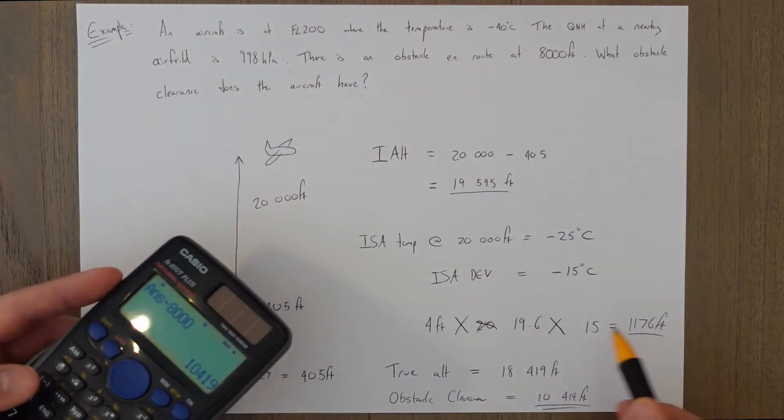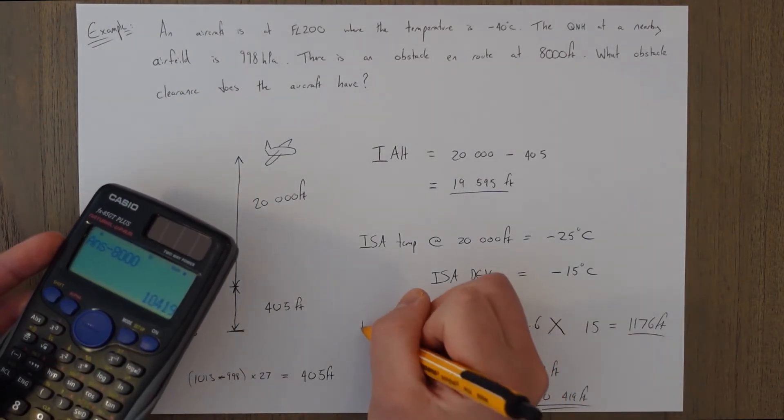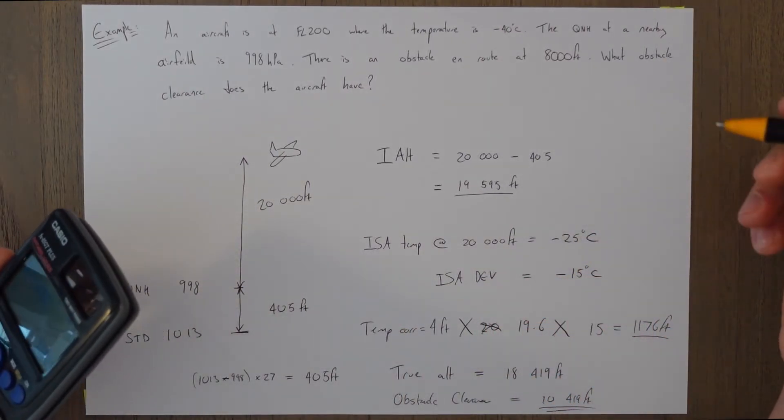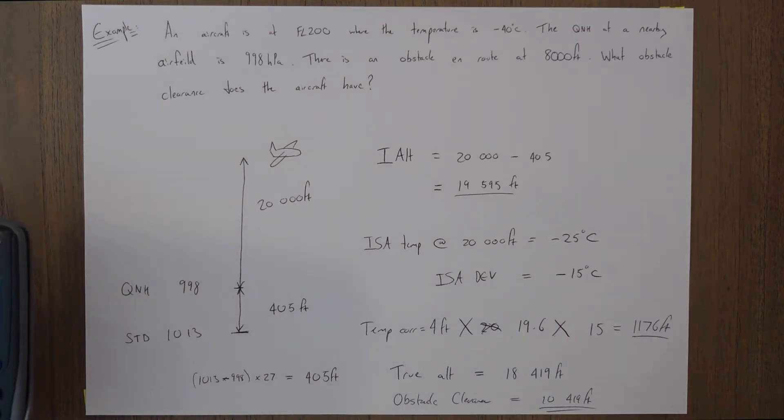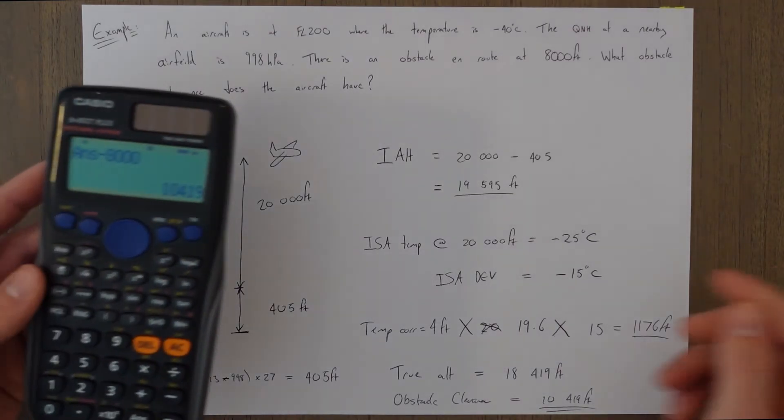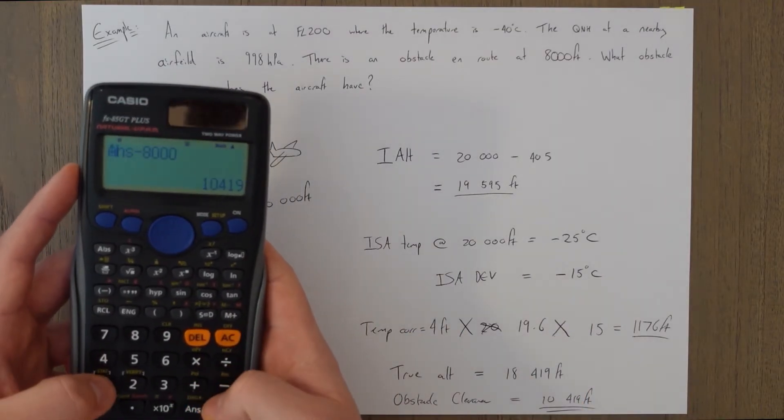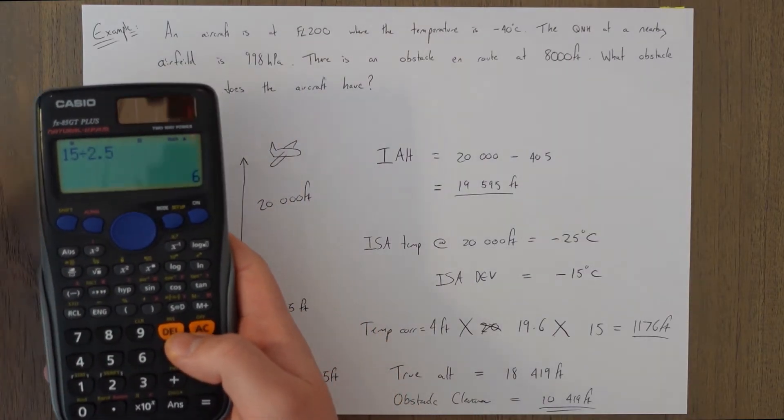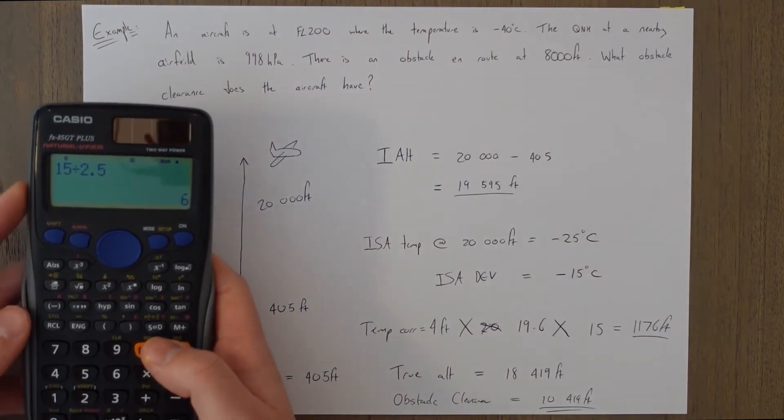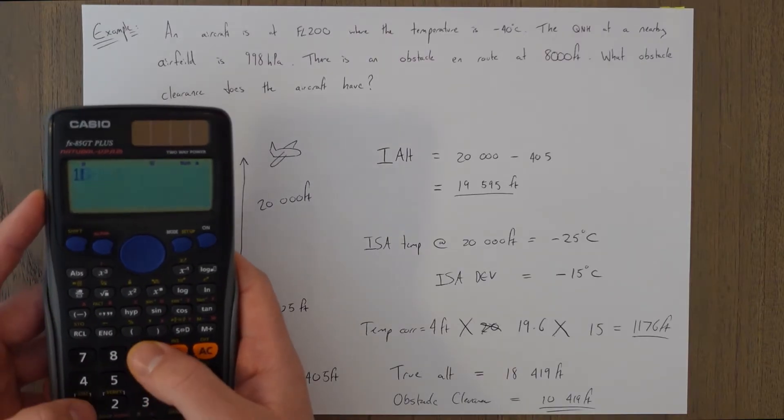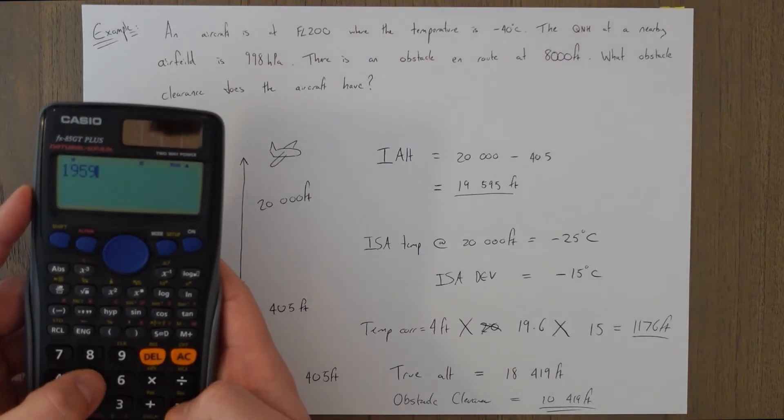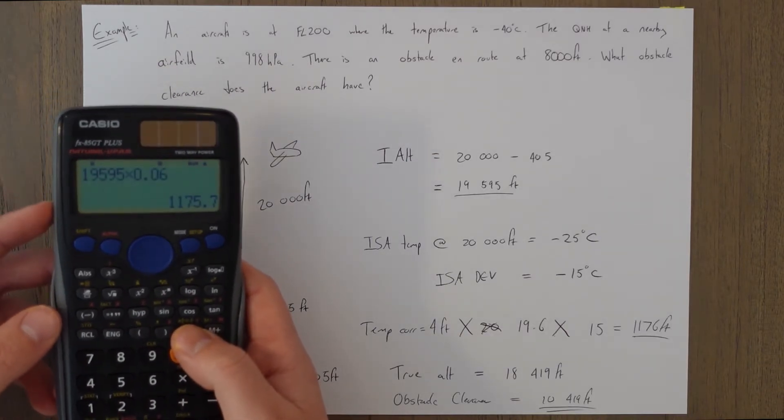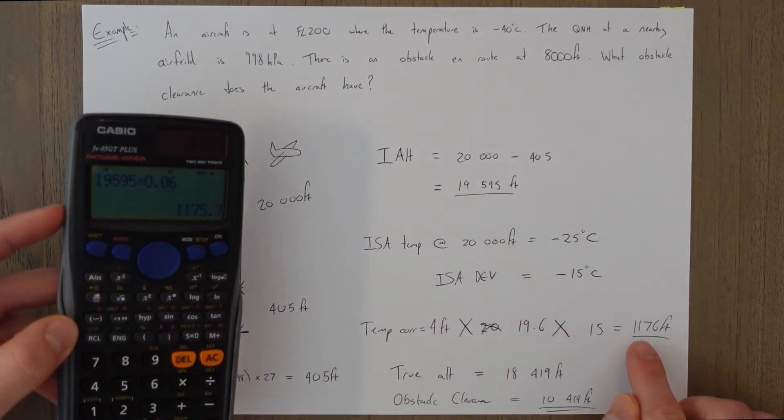Or you don't have to do the temperature correction this way. You can do that one percent per 2.5 degrees of ISA deviation that I was talking about. So we'll do a quick calculation of that. So the ISA deviation is minus 15, so 15 divided by 2.5 is going to be six. So we're doing a six percent change in altitude. So 19,595 times 0.06, that's six percent, and we're looking at 1175.7.